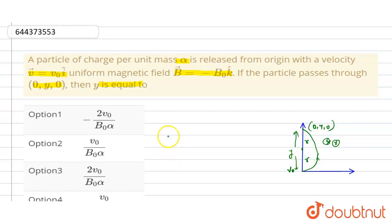Therefore, the value of y equals 2r. And we know that r is given by the formula r equals mv divided by qB in a magnetic field. According to the question, it is given that charge per unit mass is alpha.